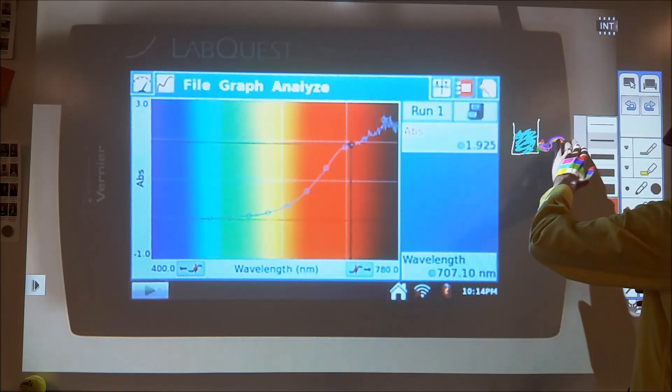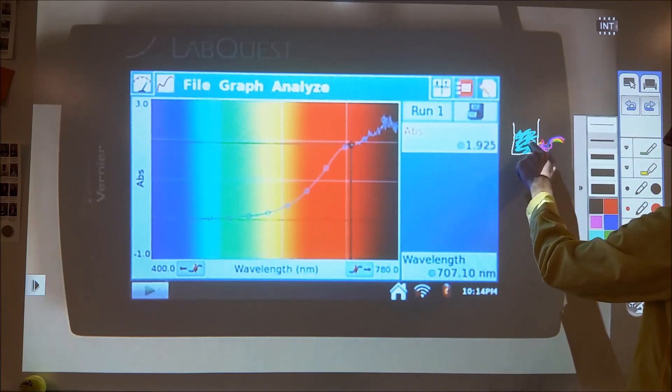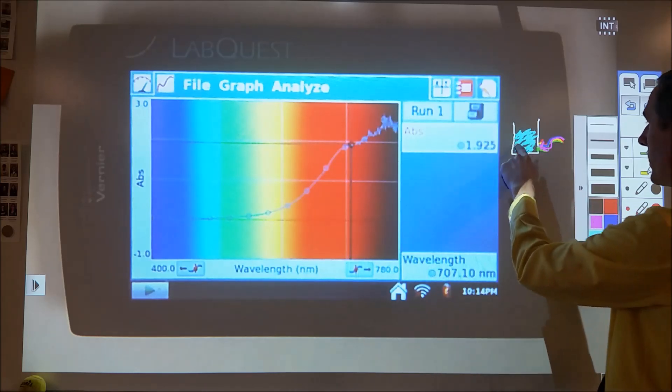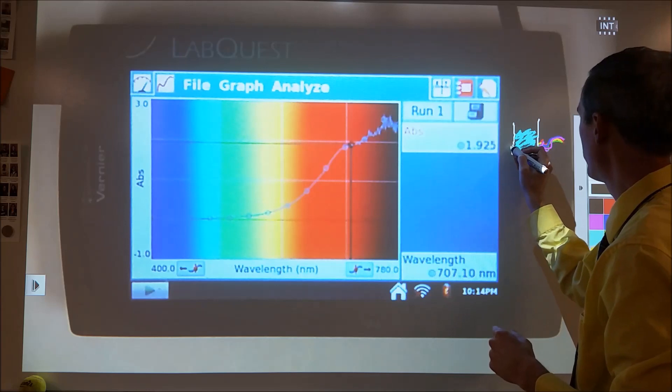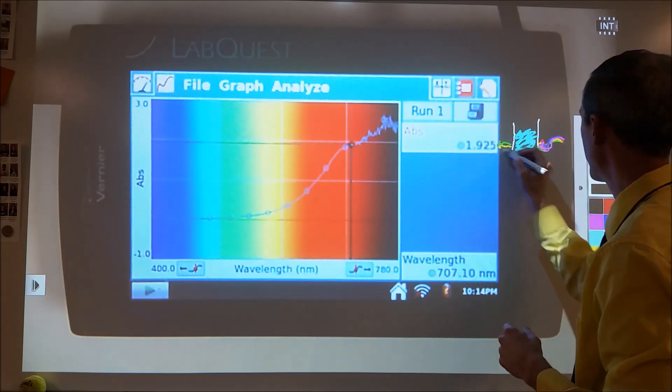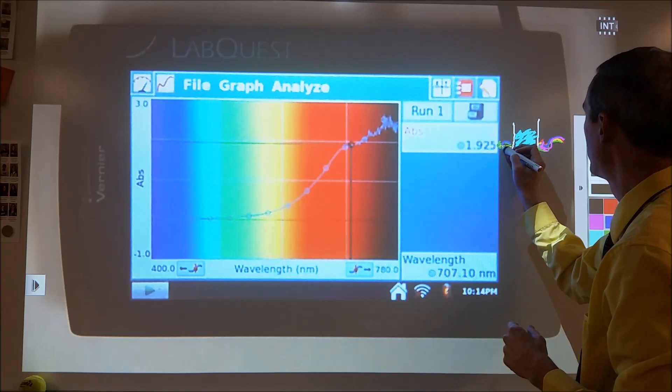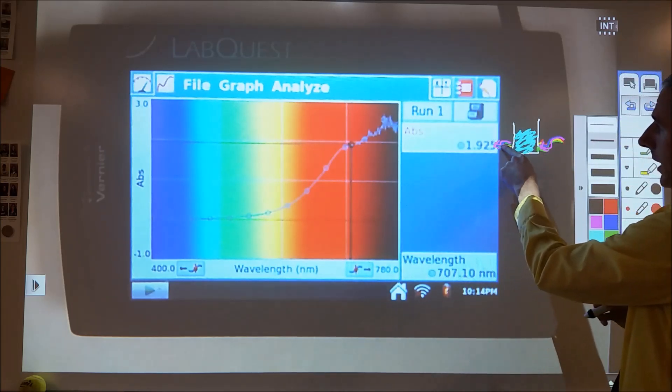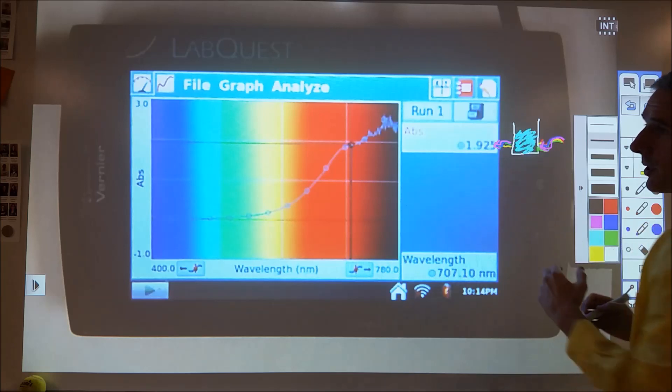What happens is that the red and the orange somehow interact with the solution. On the other side, we have a little bit of yellow still coming out, some green, but a lot of blue and a lot of violet. Our eye perceives that solution as being blue.